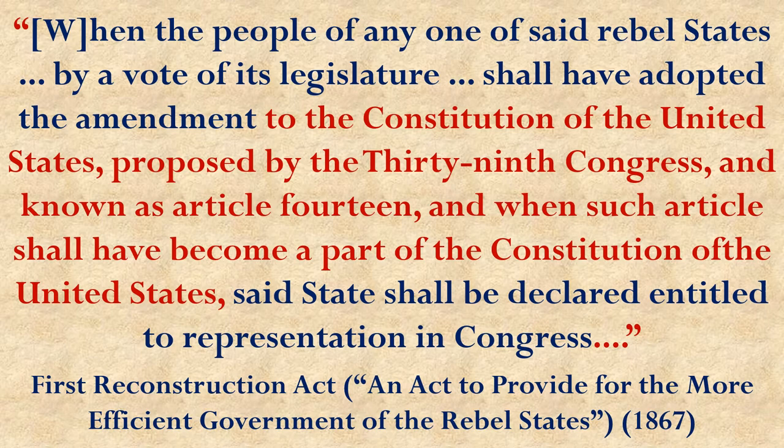Congress found a way to force states to approve the amendment. Normally, an amendment proposed by Congress is sent to states to be ratified, and you need three-fourths of states to agree. But more than one-quarter of states were Southern states that had been in rebellion — there was no way they'd agree. So Congress passed the First Reconstruction Act, declaring that the existing state governments were dissolved. They would only allow states to have their own governments and representation in Congress if they approved the 14th Amendment.